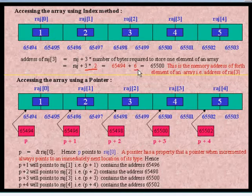This is the memory address of the 4th element of the array, which is the address of RAJ[3]. Now you know how the compiler calculates the address of an element using the index method.